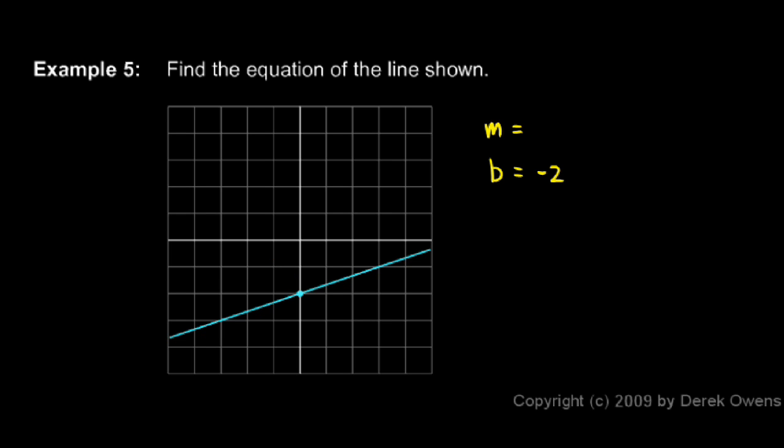For the slope, if we pick one point and another point, it looks like it crosses the grid lines on our graph right there at the point (3, negative 1).